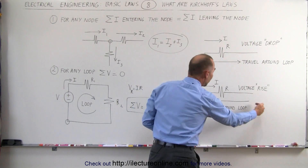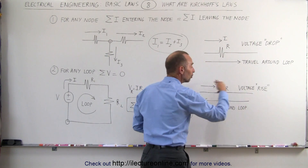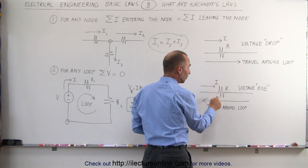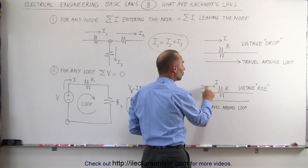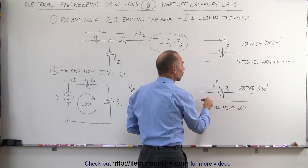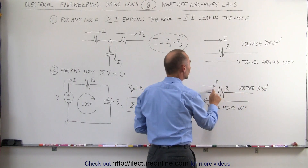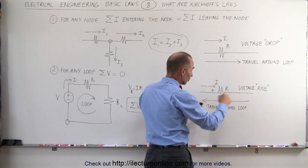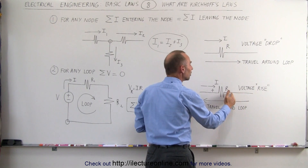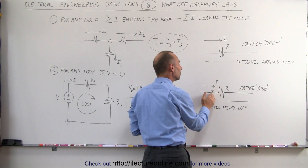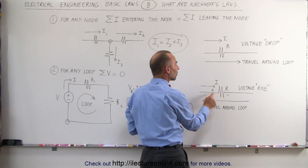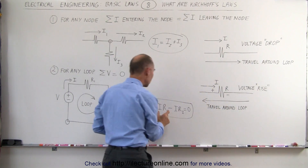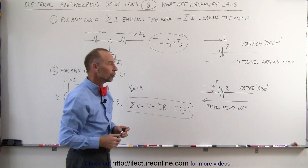However, if we travel in the opposite direction — let's say we go around the loop from right to left, but the current flows from left to right — so now we're traveling in the opposite direction of the current. When we travel across the resistor, we experience a voltage rise. We know that the voltage is higher on the left side compared to the right side. Therefore, when we travel from the negative end of the resistor to the positive end — meaning the potential is higher here — we see a voltage rise, and we would add a positive voltage instead of a negative voltage.